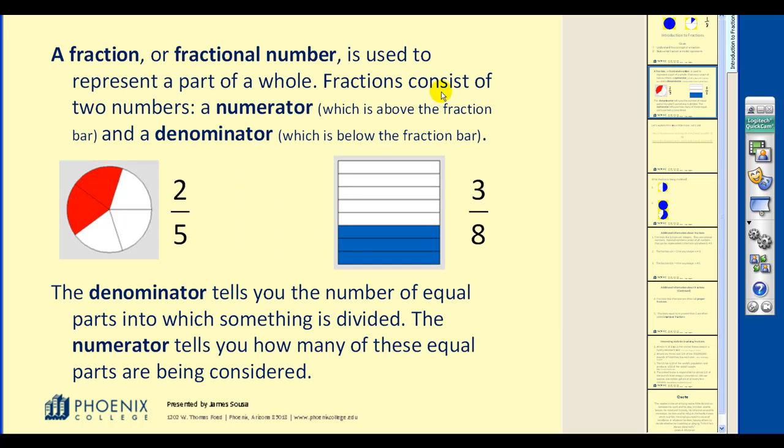A fraction or fractional number is used to represent a part of a whole. Fractions consist of two numbers, a numerator, which is above the fraction bar, and a denominator, which is below the fraction bar. The denominator tells you the number of equal parts into which something is divided, while the numerator tells you how many of these equal parts are being considered.